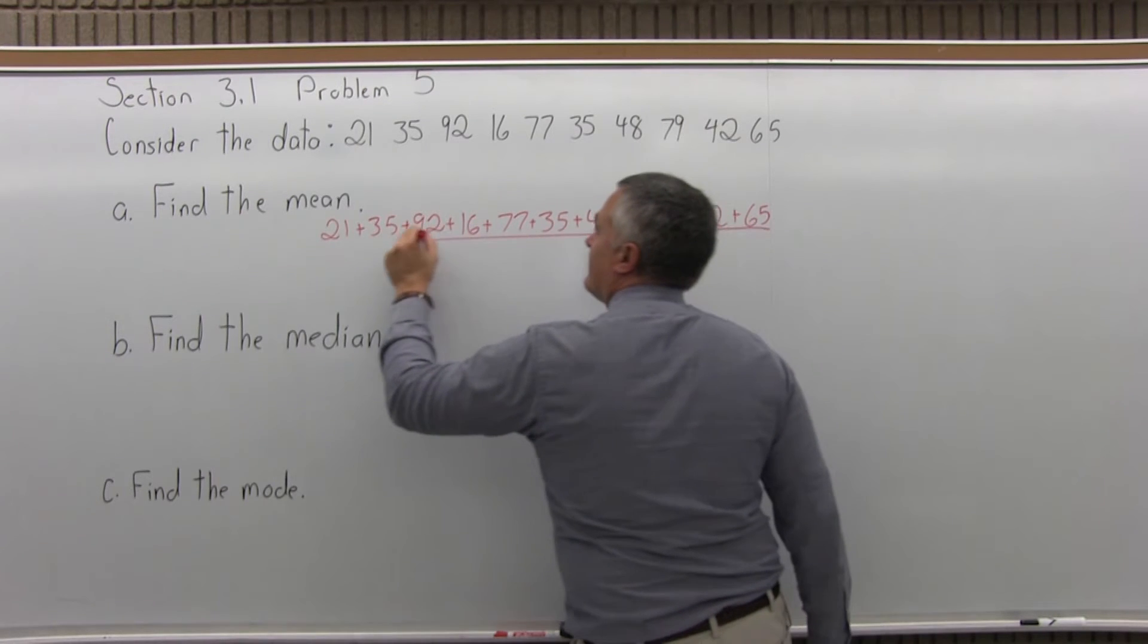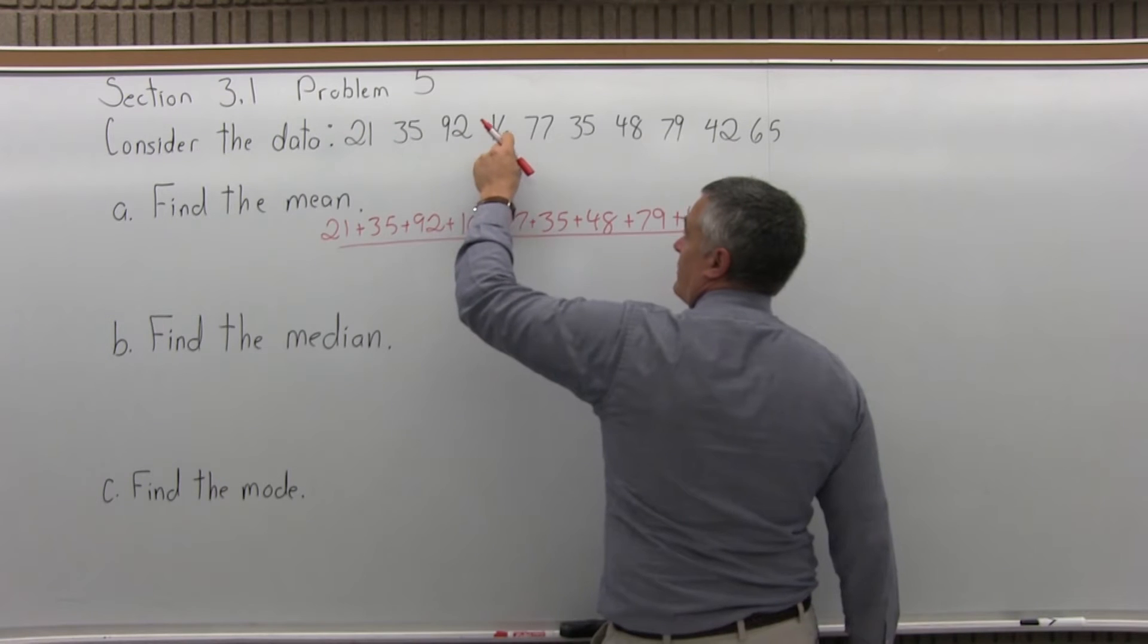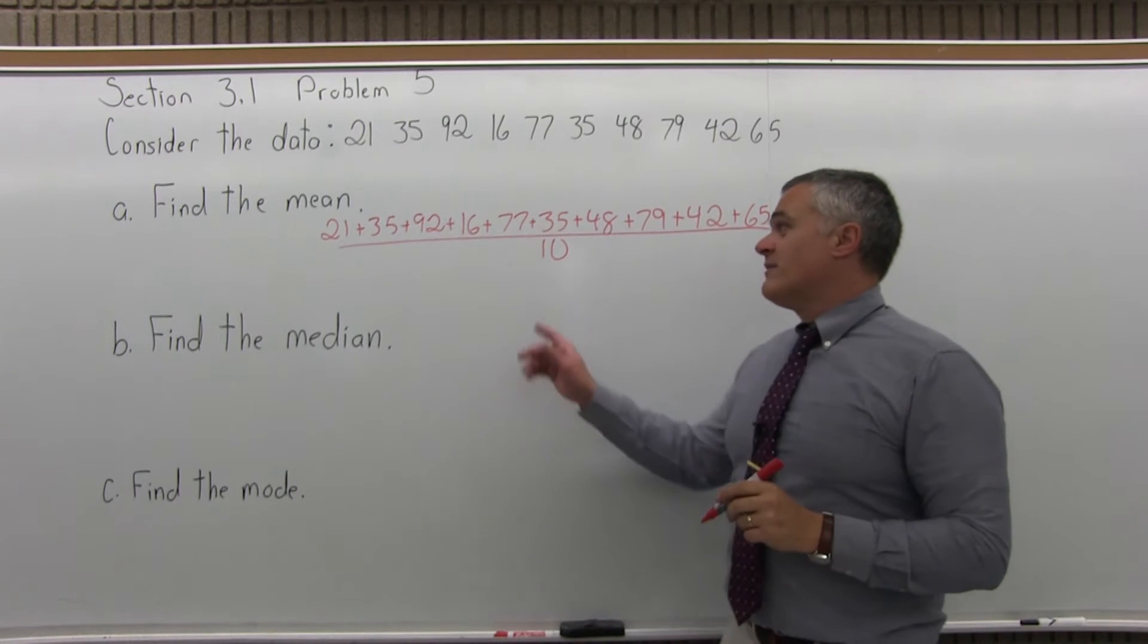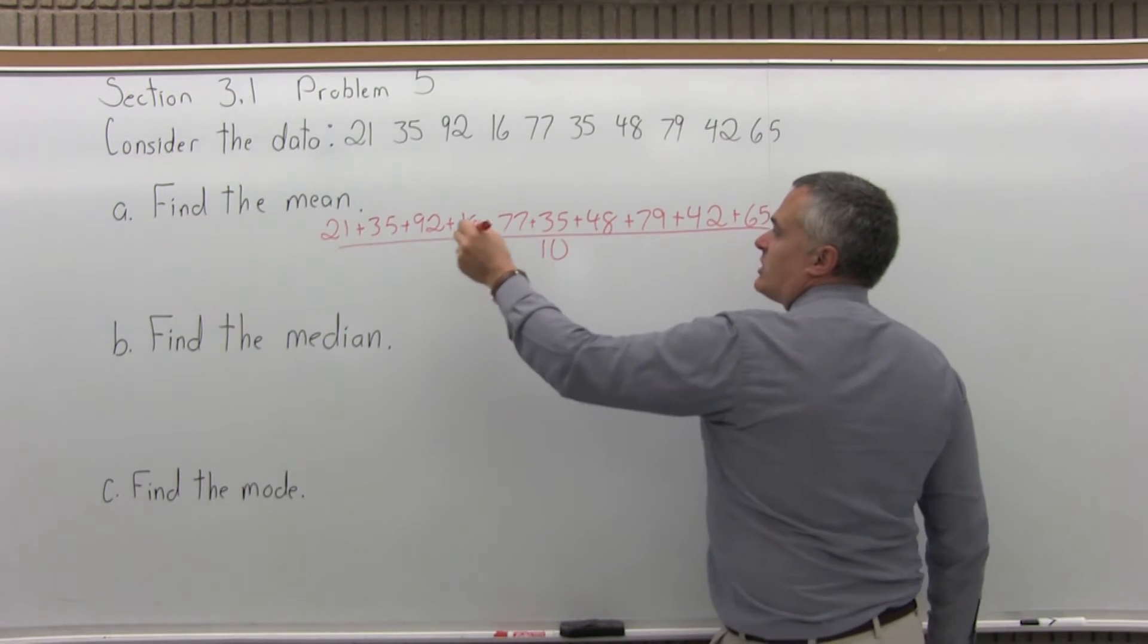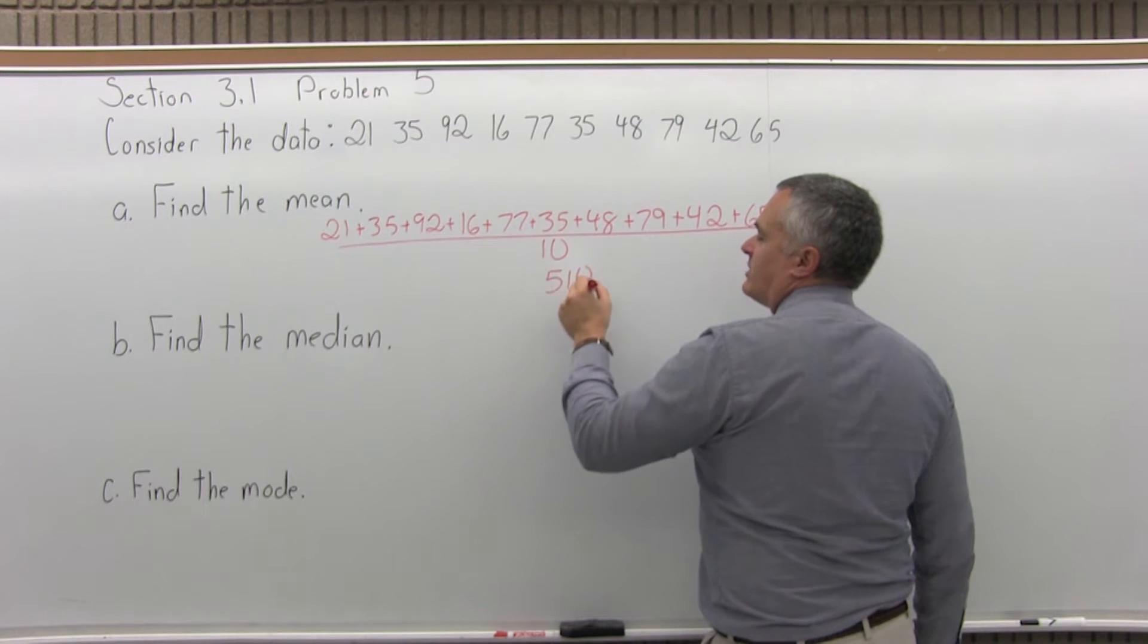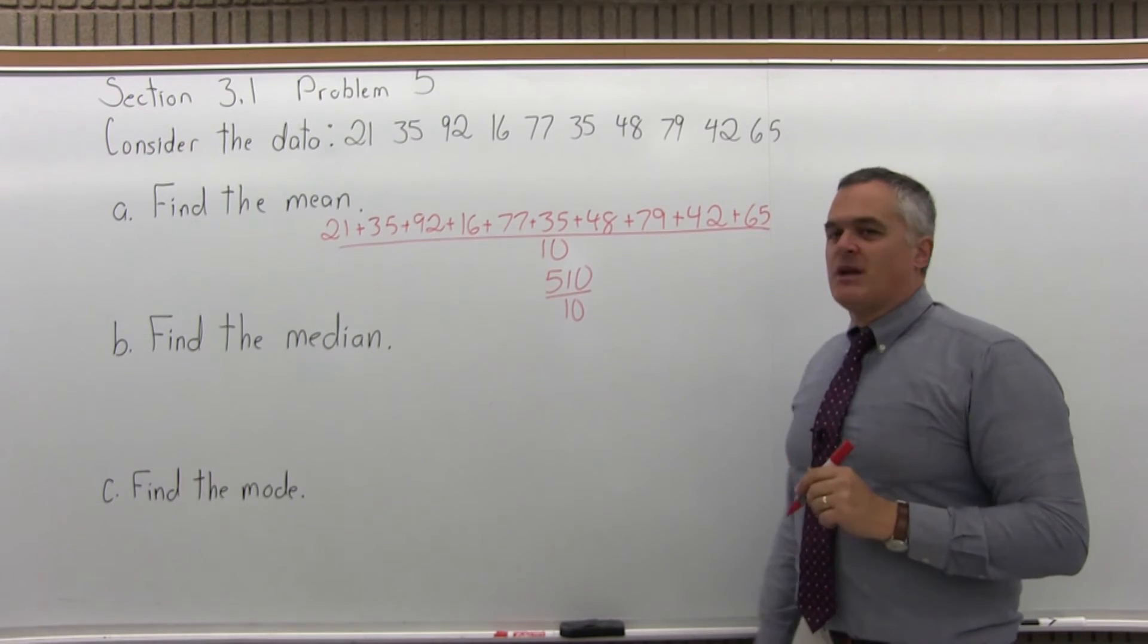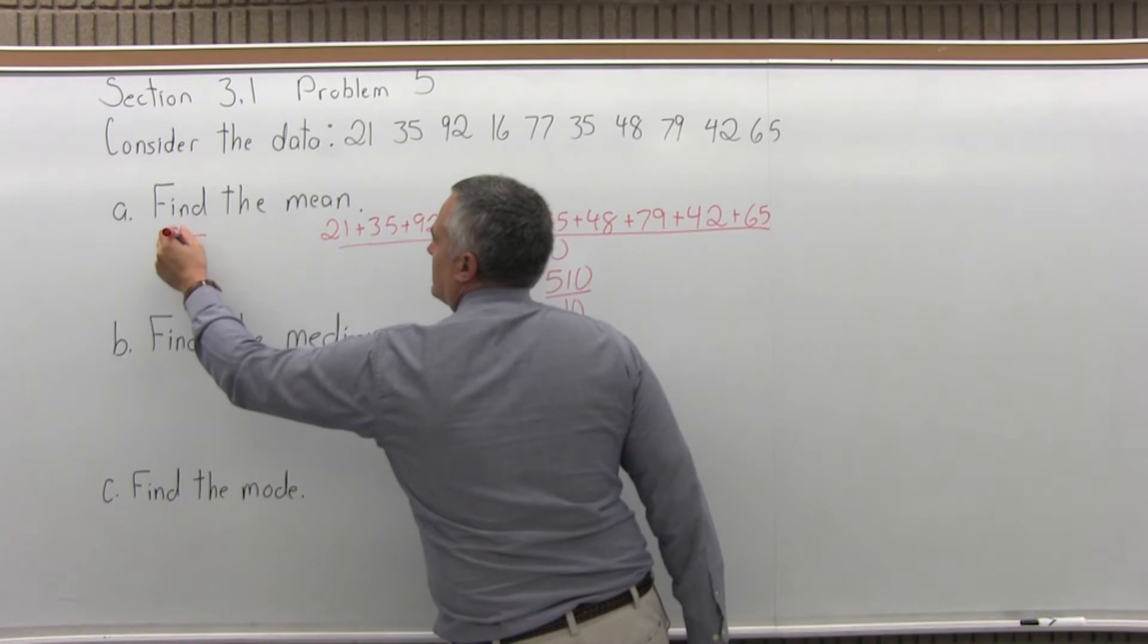And we want to divide that by how many data values we have. So we have 1, 2, 3, 4, 5, 6, 7, 8, 9, 10 data values. So we have the total of all the data values divided by 10 because there are 10 data values. And if you get a total of all the numbers on the top, that totals up to 510. And the bottom is 10. So 510 divided by 10, the mean is 51.